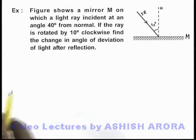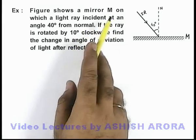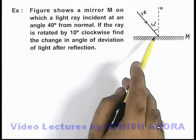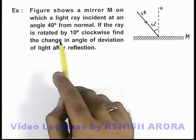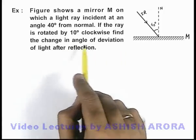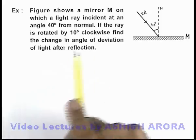In this example, the figure shows a mirror M on which a light ray is incident at an angle 40 degrees from normal. If the ray is rotated by 10 degrees clockwise, we are required to find the change in angle of deviation of light after reflection.